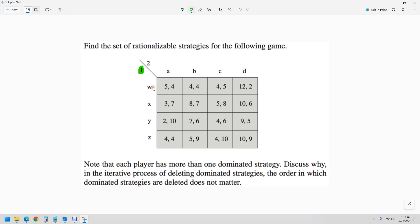If Player 2 does A, Player 1 is best off to do W, so I'm going to highlight that one. When Player 2 does B, Player 1 is best off to do X. Player 2 does C, Player 1 is best off to do X. Player 2 does D, and Player 1 is best off to do W.